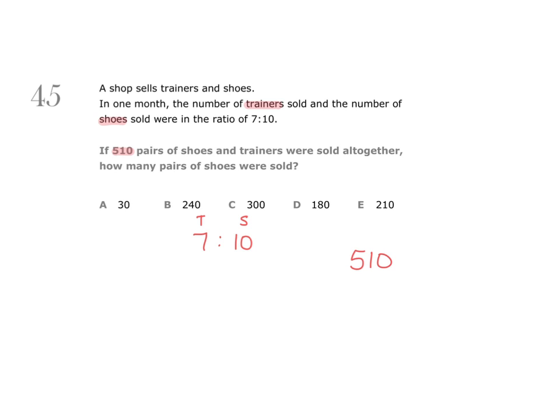Look at the ratio and add the two parts together. They come to 17. So for every 17 pairs of footwear that were sold, 7 were trainers and 10 were shoes.